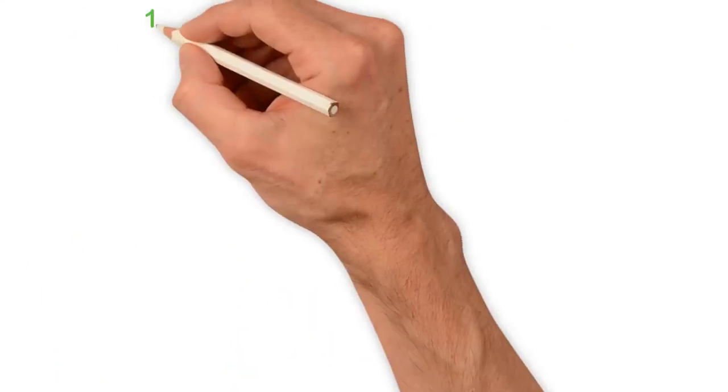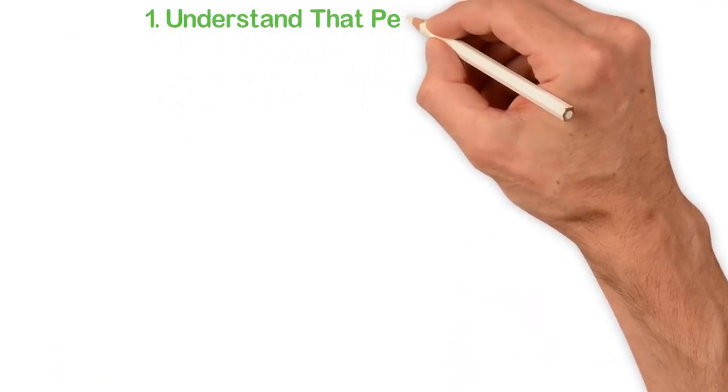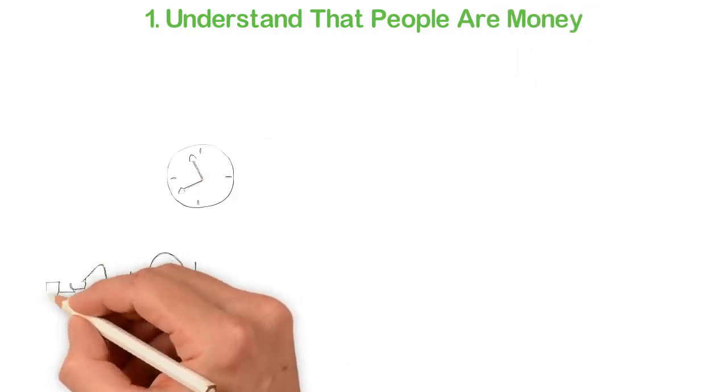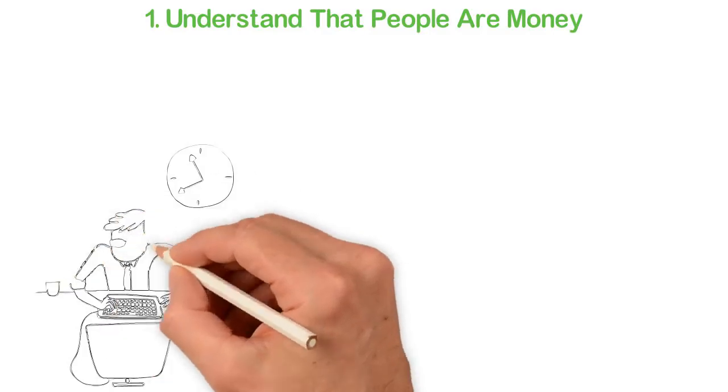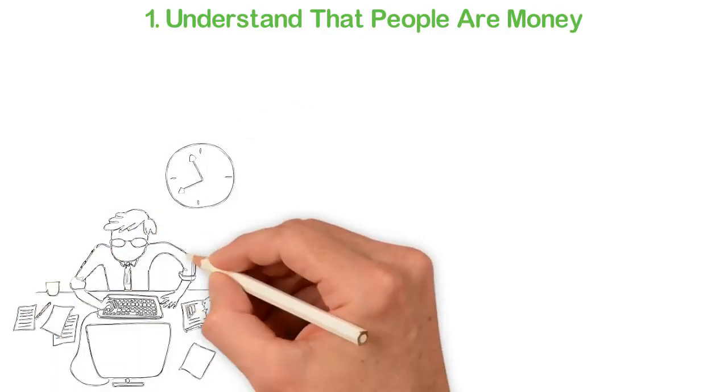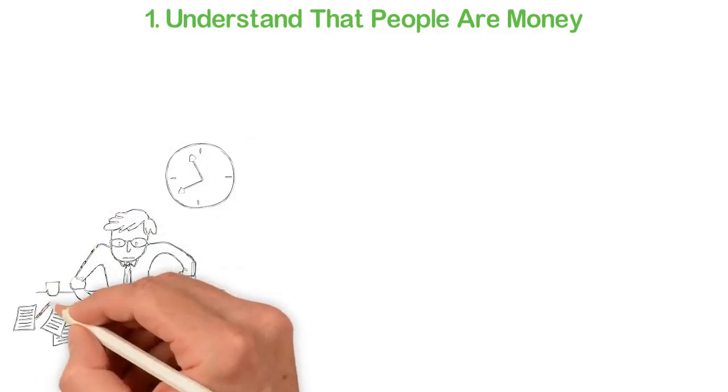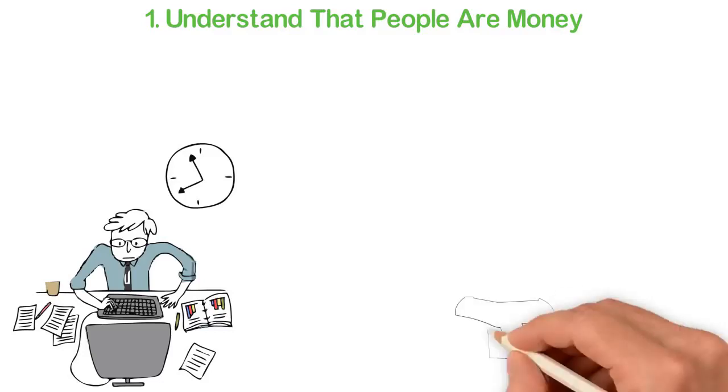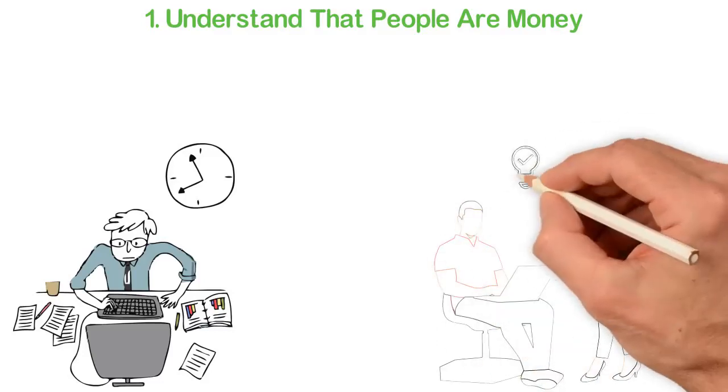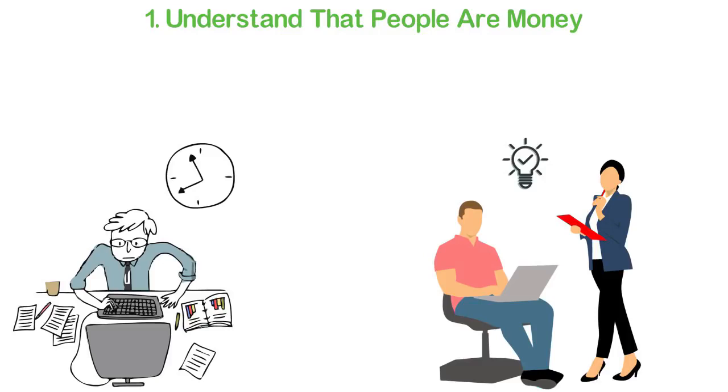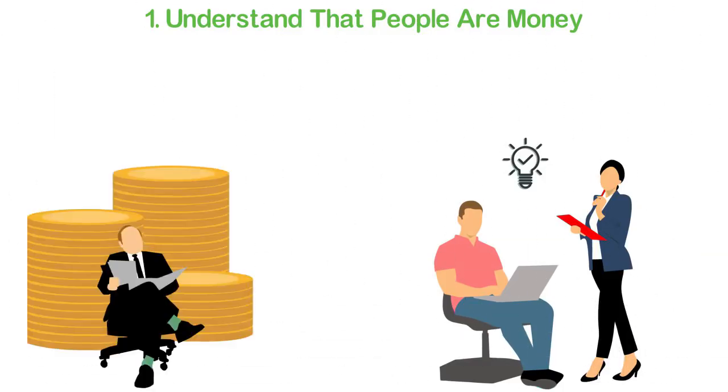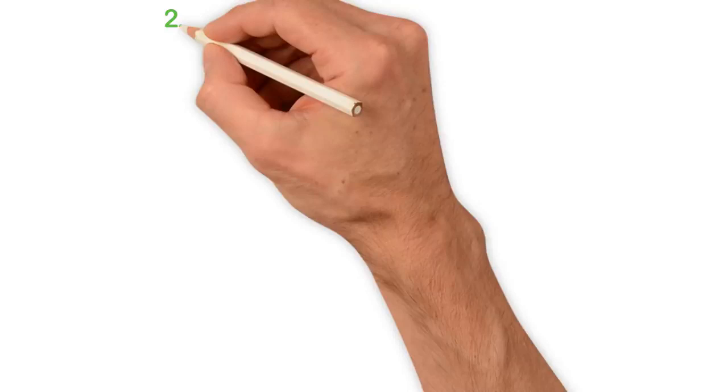Let me leave you with a few tips. Number one: Understand that people are money. This is the most important point in this video because if you understand that people are money, knowing that there's a room where a billion people live will make you restless. You should not sleep until you figure out how to serve a percentage of the billions of people in this room through the internet.